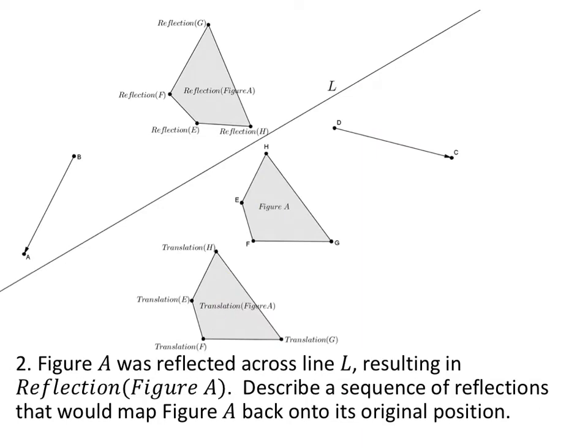Figure A was reflected across line L, resulting in this reflection A prime. Describe a sequence of reflections that would map figure A back into its original position.